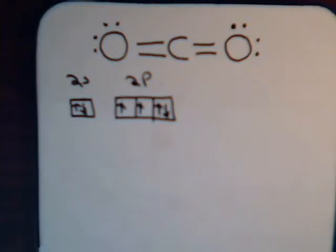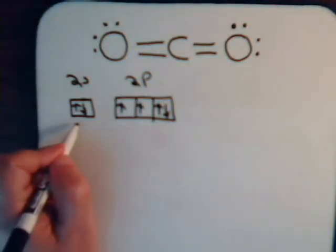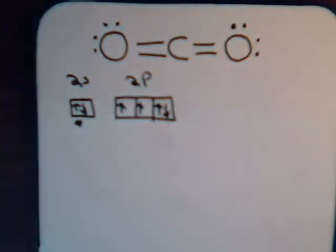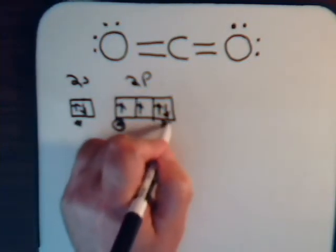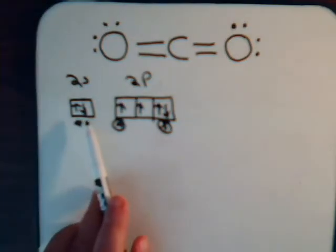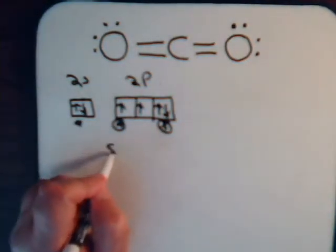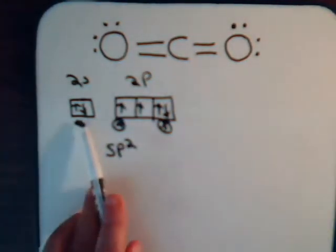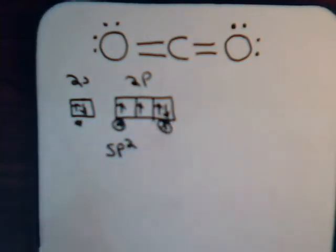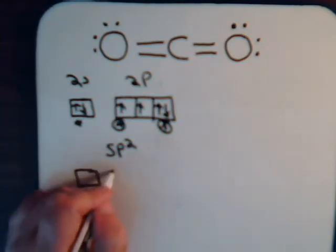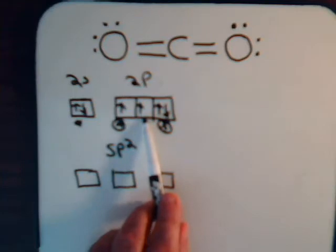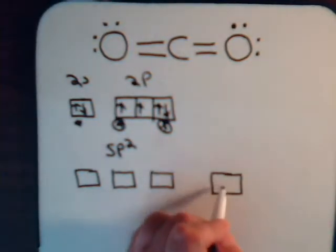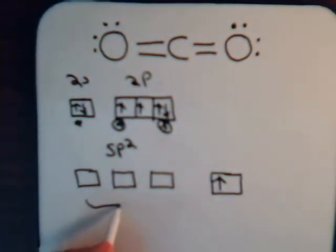This is oxygen. What would happen if the 2s orbital and 2 of the p orbitals combine? So we're taking an s orbital and 2p orbitals — that's sp2 hybridization. We're combining together one, two, three atomic orbitals. What emerges is three equivalent molecular orbitals — equivalent because they have the same energy level — and then there's one unhybridized p orbital left over with its single electron. These are sp2 orbitals.